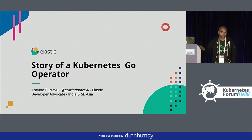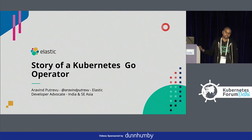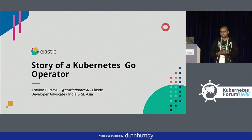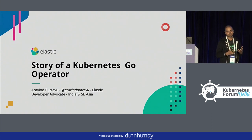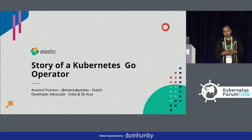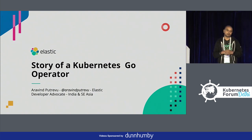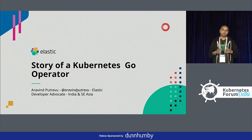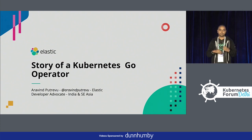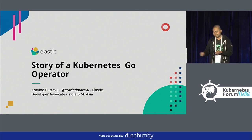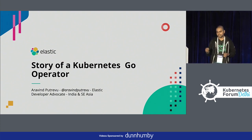I work at a company called Elastic. It's the creator of Elasticsearch, Logstash, Kibana, and all these open source projects. Today we are going to talk about the story of how we developed an operator in Go to run Elasticsearch on Kubernetes.